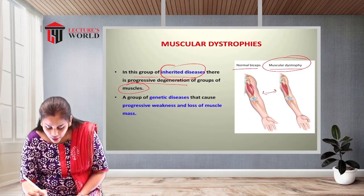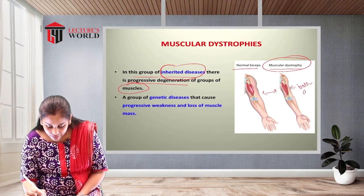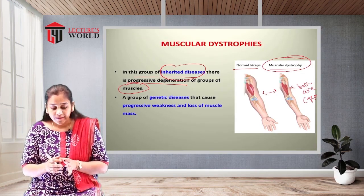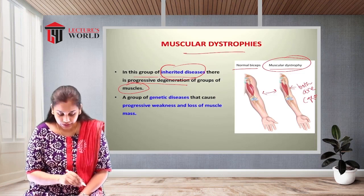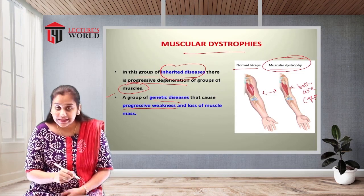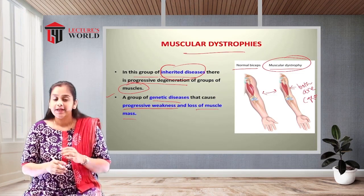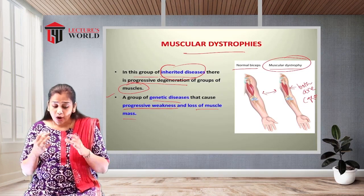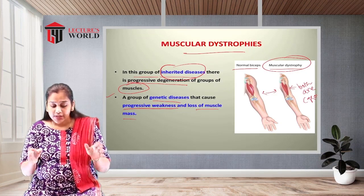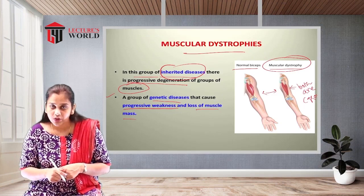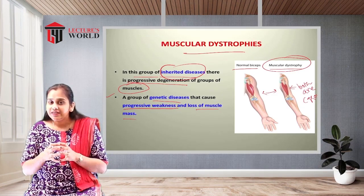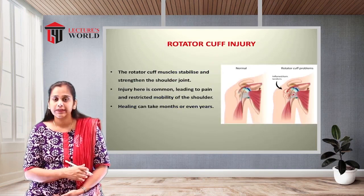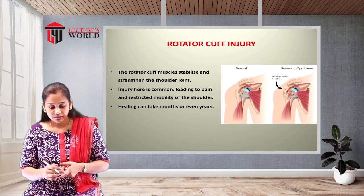In muscular dystrophy, a group of muscles become degenerated. It is a group of genetic diseases that cause progressive weakness and loss of muscle mass. The muscles become very weak and very shrunken. Muscular dystrophy is mostly seen in genetic and hereditary cases.